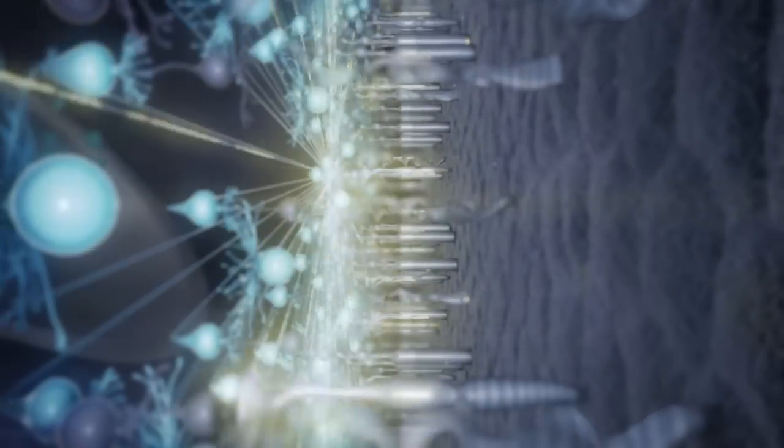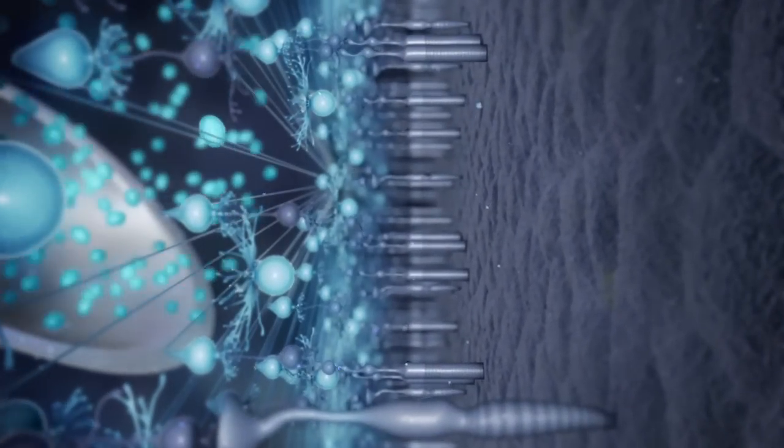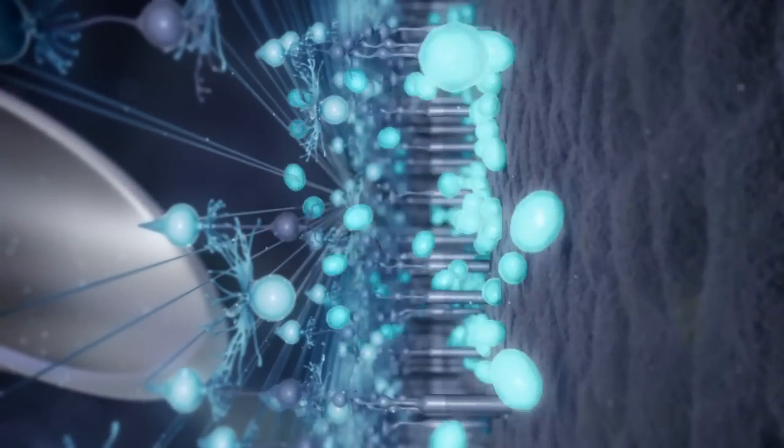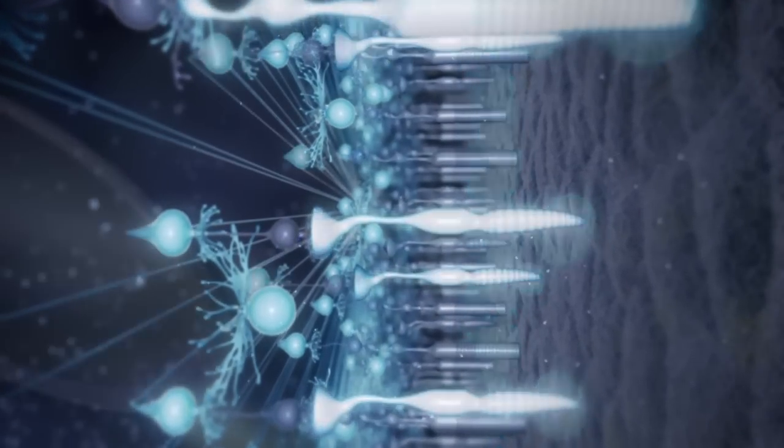By injecting stem cells into the eye, it might be possible to regenerate neurons in the retina. Another option might be to activate stem cells that are already present in the retina but lying dormant.